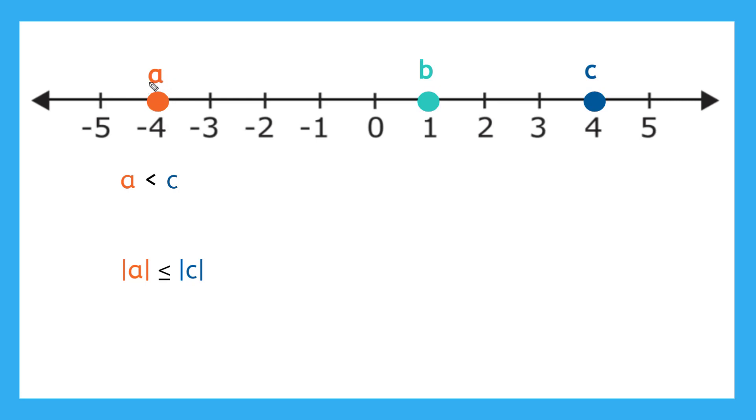So first off, we have A here. Where's A? That's negative four. So we would say A is negative four. And then C here, it says less than C. And where is C on our number line? Yeah, we have C over here at positive four.